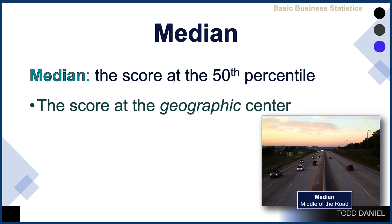When I was riding my bike one morning, I took a picture of the median of a road. You can see the median as the middle of the road. It divides the road in half — half of the lanes and half of the traffic is on one side of the median, and the other half is on the other side.